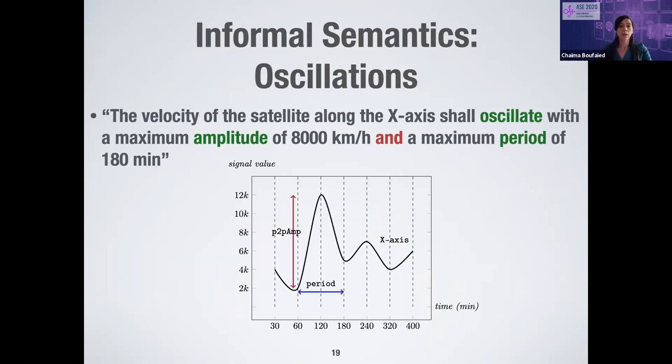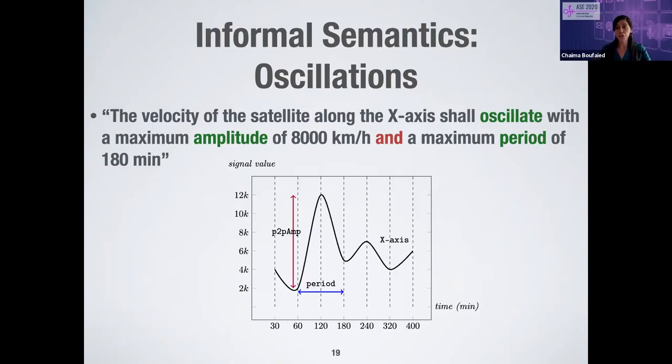Consider an example of a signal that violates the oscillations-based property. As seen in the figure, this signal satisfies the period feature because it shows a period whose duration is less than 180 minutes. However, there is a clear violation of the peak-to-peak amplitude, as the signal shows an amplitude exceeding 8,000 kilometers. Since the property defines a conjunction between two feature-based predicates, this leads to the violation of the whole property.